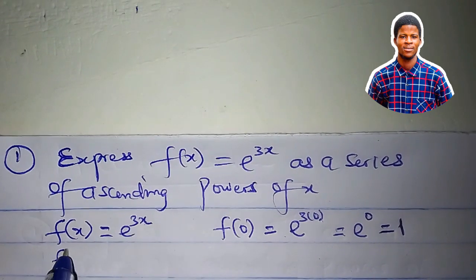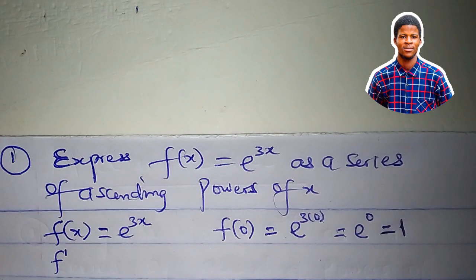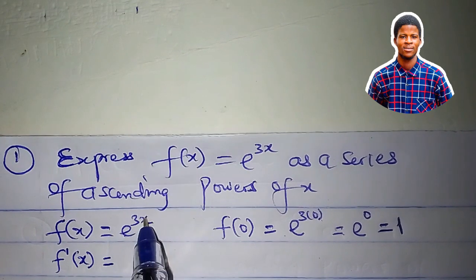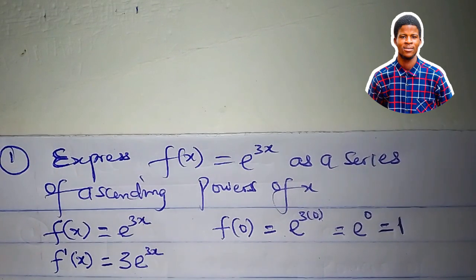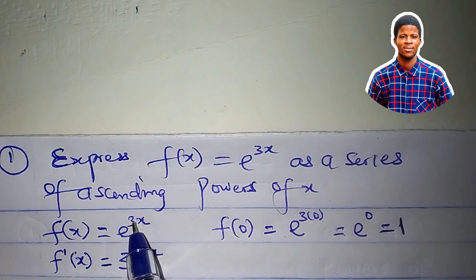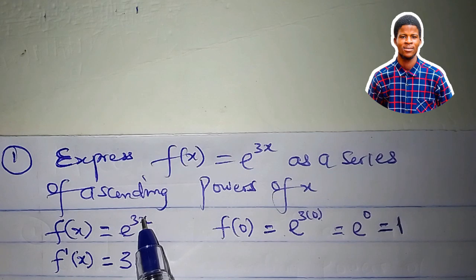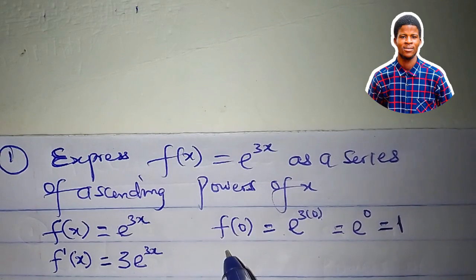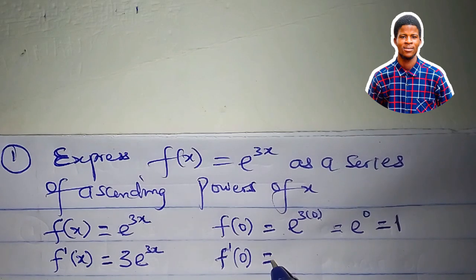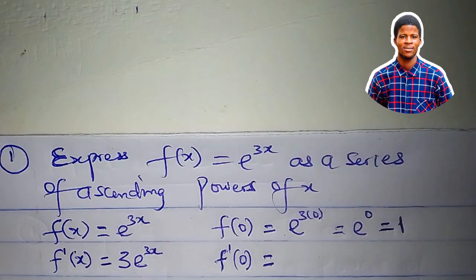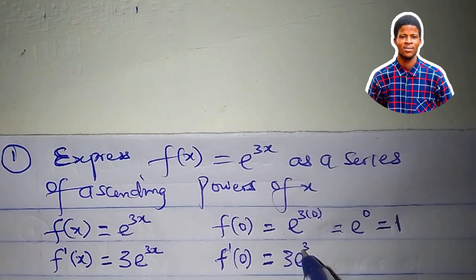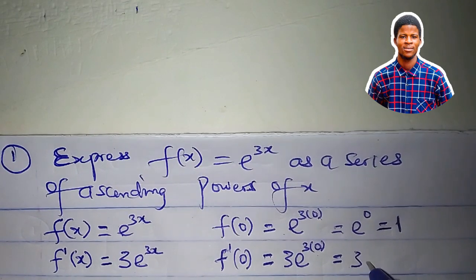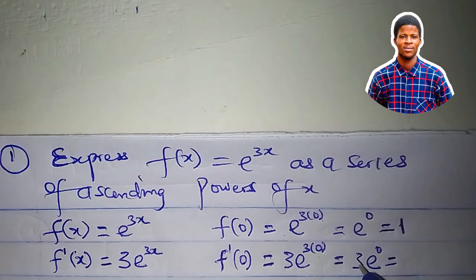Now we differentiate f of x to get f prime of x, the first derivative with respect to x. Differentiating e to the power of 3x gives 3e to the power of 3x, using the chain rule shortcut: differentiate 3x to get 3, then multiply what is outside. So f prime of 0 is 3e to the power of 3 times 0, which is 3e to the power of 0, and e to the power of 0 is 1, so f prime of 0 equals 3.